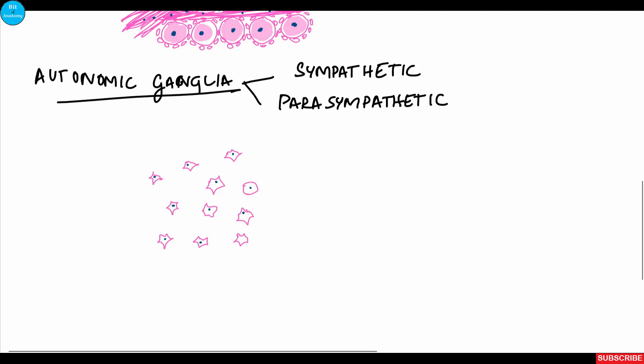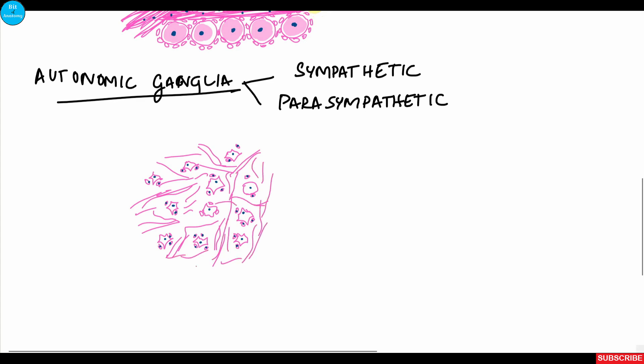The nucleus in autonomic ganglion cell bodies is centrally placed in parasympathetic ganglia but eccentrically situated in sympathetic ganglia — the only normal instance in nervous tissue where an eccentric nucleus is seen. In other neurons, an eccentric nucleus indicates cellular damage. Similar to sensory ganglia, neurons of autonomic ganglia are surrounded by satellite cells, but the number is minimal — just two or three. There is no bundle arrangement; the neurons are scattered and separated by thin unmyelinated nerve fibers.